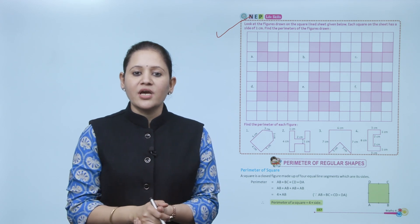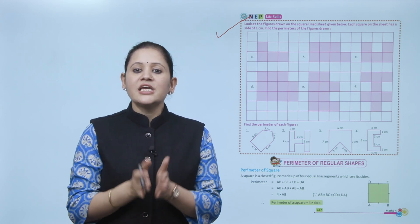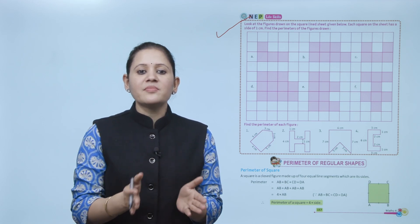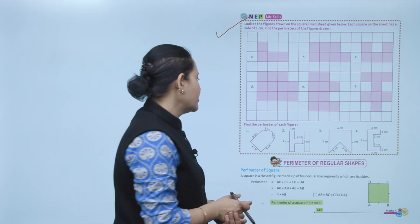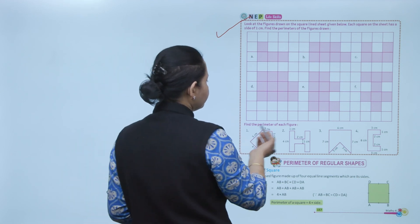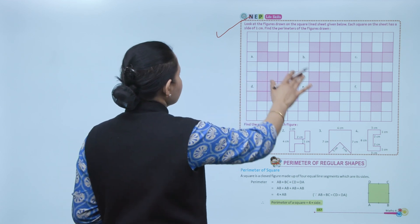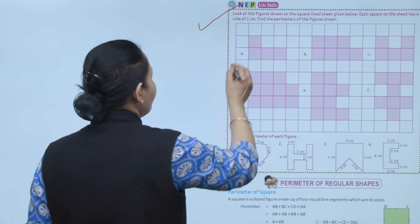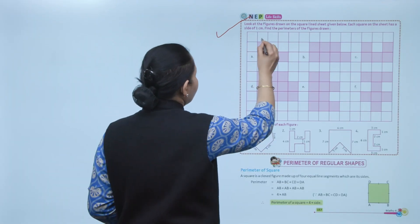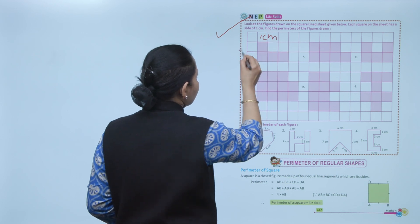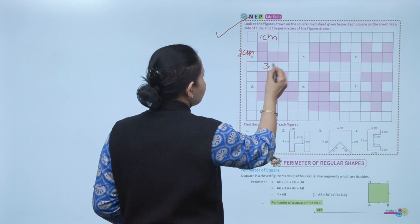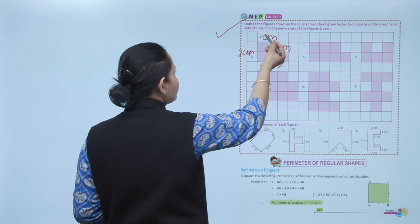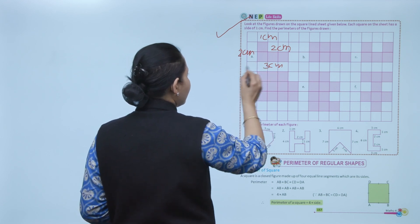Life skills: look at the figure drawn on the square line sheet given below. Each square on the sheet has a side of 1 centimeter. Find the perimeter of the figure drawn. Counting: 1 plus 1 equals 2 centimeters, 3 centimeters, and 2 centimeters. Total: 2 plus 1 is 3, and 2 is 5, and 3 is 8 centimeters.